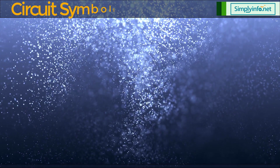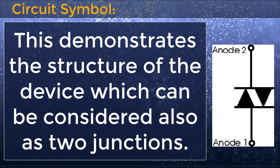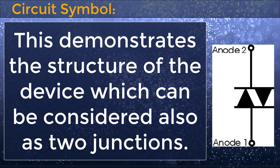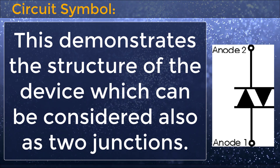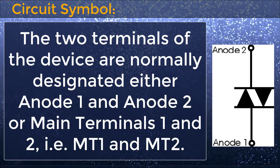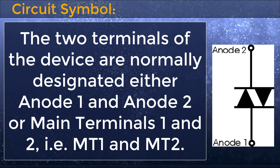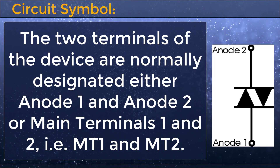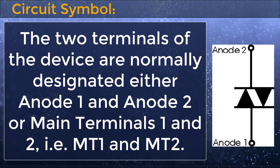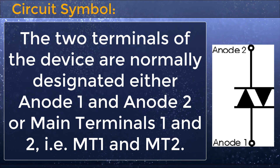Circuit symbol: this demonstrates the structure of the device, which can be considered as two junctions. The two terminals are normally designated either anode 1 and anode 2, or main terminals 1 and 2, that is MT1 and MT2.